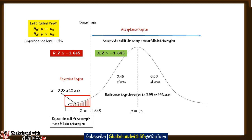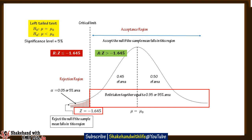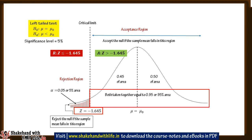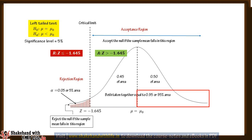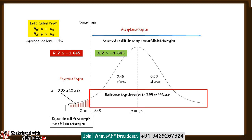The acceptance region, where the null hypothesis will be accepted, is the area under the normal curve separated by the critical limit z equal to minus 1.645 from the rejection region on the left tail at 5% significance level. The area under the left half of the curve up to z equal to minus 1.645 is 0.45, and the area under the right half is 0.50. Both taken together equal 0.95, or 95% of the curve.